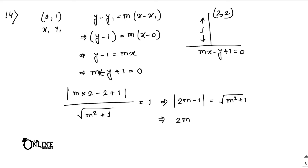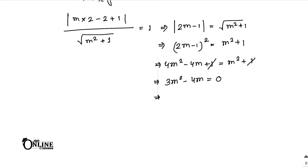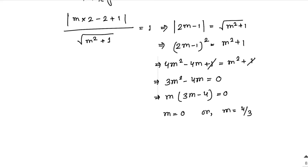Squaring both sides: (2m minus 1) squared equals m squared plus 1. Expanding: 4m squared minus 4m plus 1 = m squared plus 1. The 1's cancel, giving 3m squared minus 4m = 0. Factoring out m: m(3m minus 4) = 0. So either m = 0 or m = 4/3.